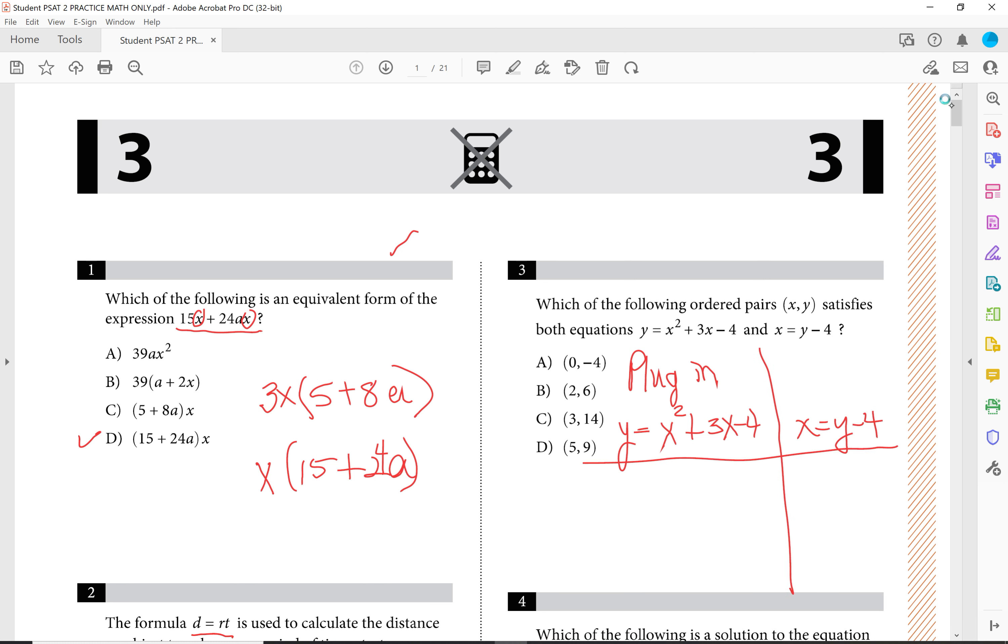And x is equal to y minus 4. So the first thing I'm going to do is I'm going to test out the 0, negative 4. Very quickly, you'll find out that y is equal to 0 squared plus 3 times 0 minus 4. And therefore, y is minus 4. And you start to think this is the answer, correct? But now, if I plug this in here, then I'm going to start with 0 is equal to negative 4 minus 4. And that is not correct because that is not the value.